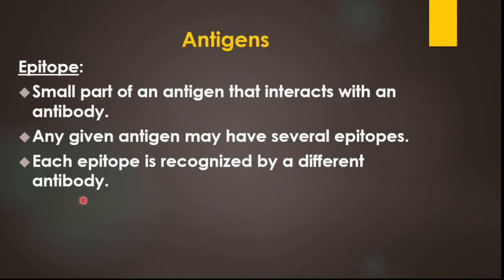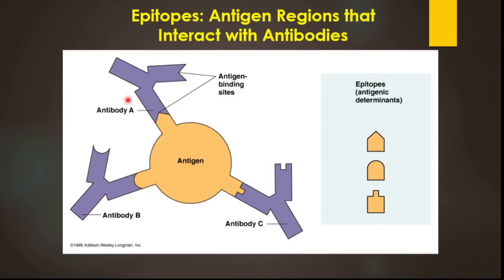An epitope is a small part of an antigen that interacts with an antibody. Each epitope is recognized by a different antibody. For example, epitope A attaches to specific antibody A, epitope B attaches to specific antibody B, and epitope C attaches to specific antibody C according to its shape. This shape-specific matching is called antigen-antibody binding.